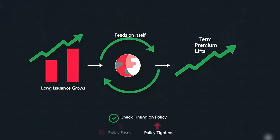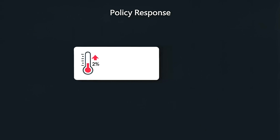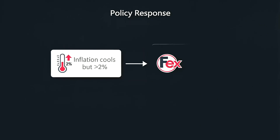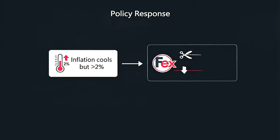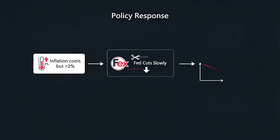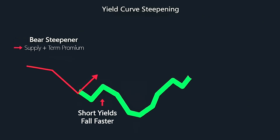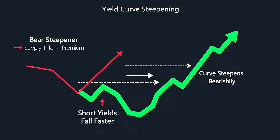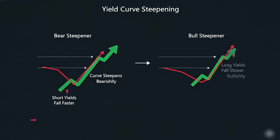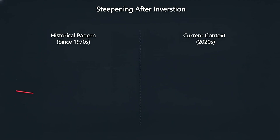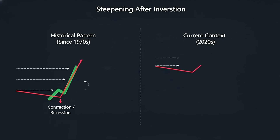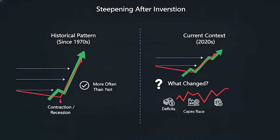Check the timing on policy. If inflation cools but stays above two, the Fed cuts slowly. Cuts reduce front-end yields. If long yields fall slower because of supply and term premium, the curve steepens bearishly at first, then bull steepens. In both cases, steepening after inversion has preceded contractions more often than not since the 1970s.